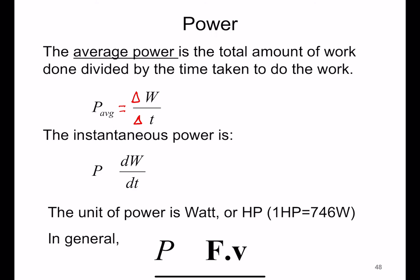So that is the definition of average power. From this definition it's clear that an engine that can do a certain amount of work in less time has greater power than an engine that can do the same amount of work in a larger amount of time.